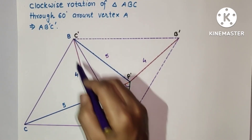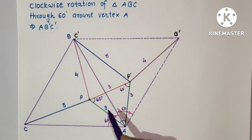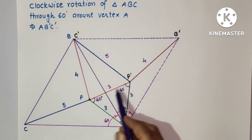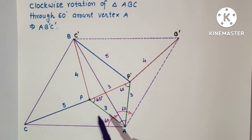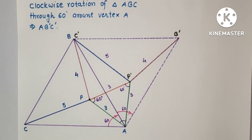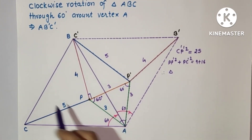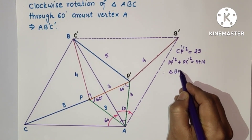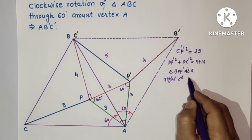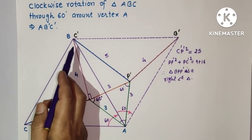Now PP dash is 3, PC dash is 4, and P dash C dash is 5. The largest side is 5. We can see that 4 squared plus 3 squared equals 16 plus 9, which equals 5 squared. By the converse of the Pythagorean theorem, triangle PP dash B is a right-angled triangle, right-angled at P, because the hypotenuse is BP dash.